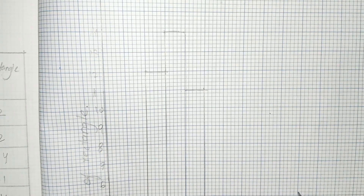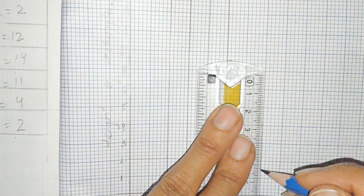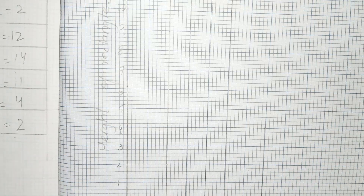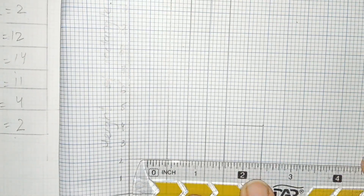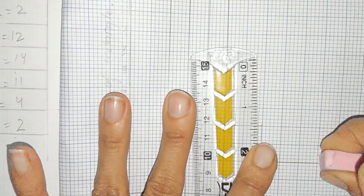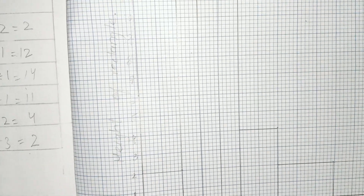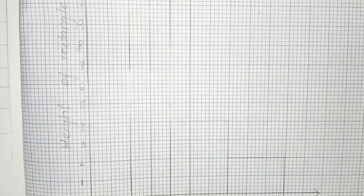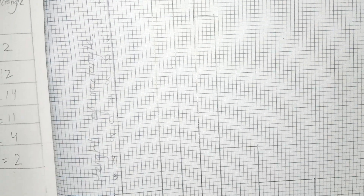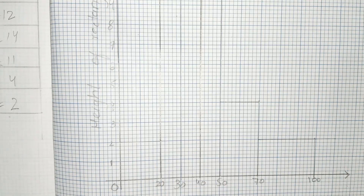From 40 to 50 the height of the rectangle is 11, and from 50 to 70 the height is 4, and from 70 to 100 the height of the rectangle is 2. This is our histogram for question 5, drawn using the height of the rectangle. Question 5 is done. I hope you understand these questions very well. Thank you very much, students, for watching. Take care.